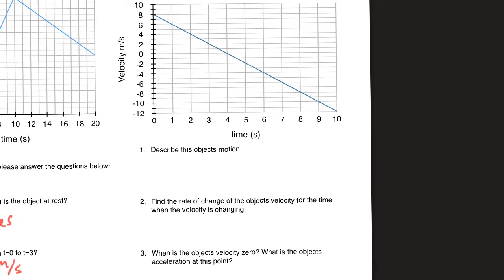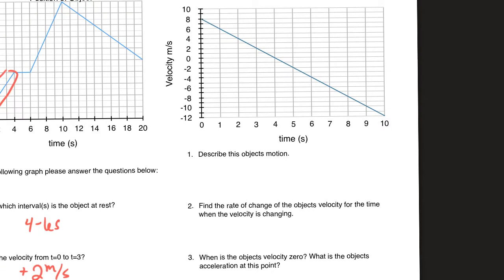Moving along to the velocity graph. You should identify where zero is on the vertical axis. There's not much work to show since you're mostly reading things off the graph. You should make a statement about the object's motion indicating it had a constant acceleration — that's a good call here. Recognize that acceleration is the slope of this graph and that it has the same slope the whole time.